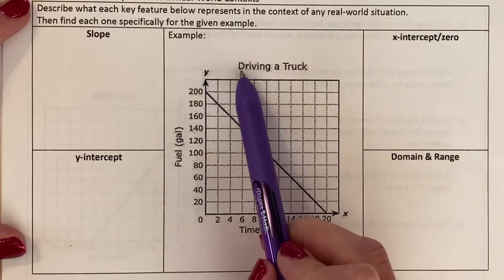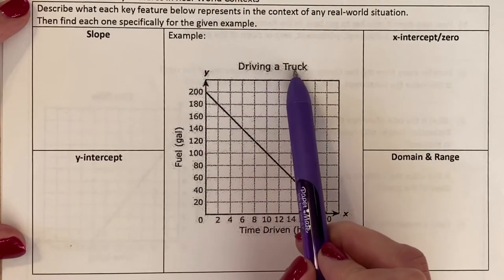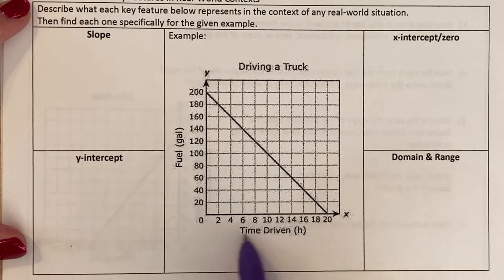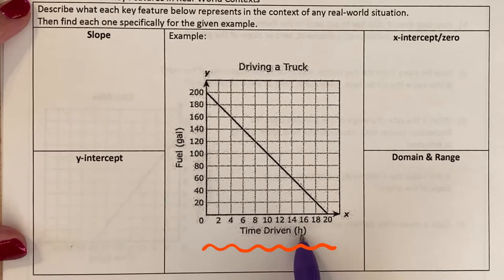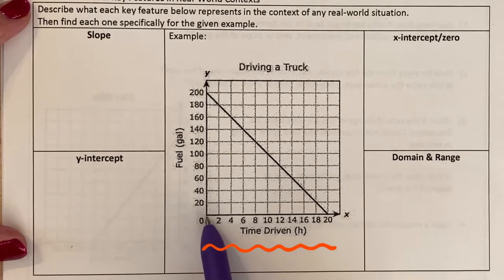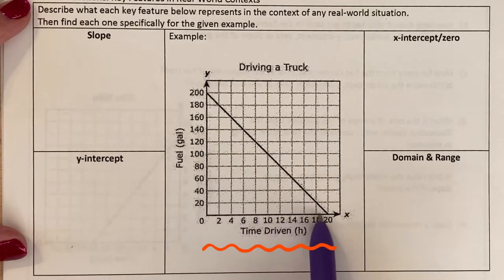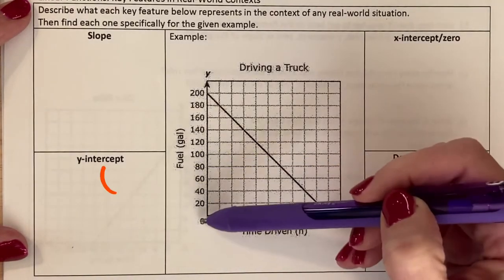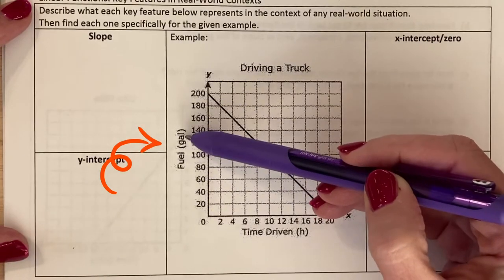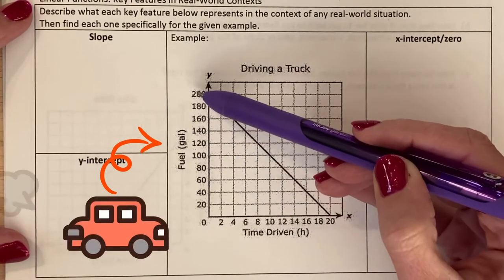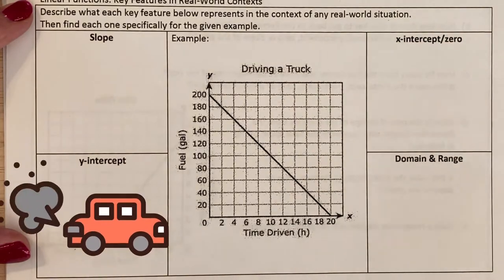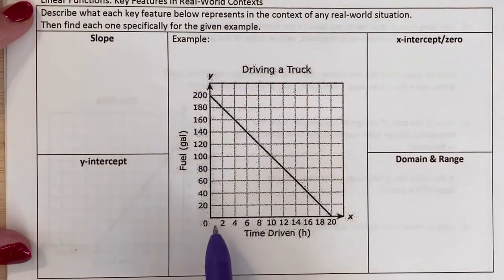Let's take a look at what our example is. It's always good to look at the title: driving a truck. Then we're going to take a look at our axes. The x-axis is time driven, and h is probably in hours. So this is how long I'm driving my truck. And my y-axis is fuel in gallons. This would be how much fuel I have.